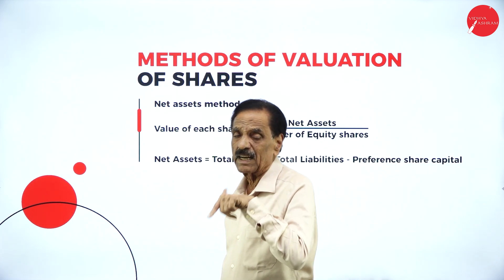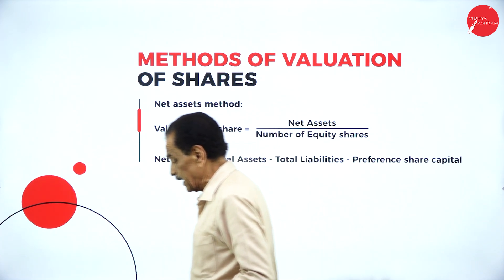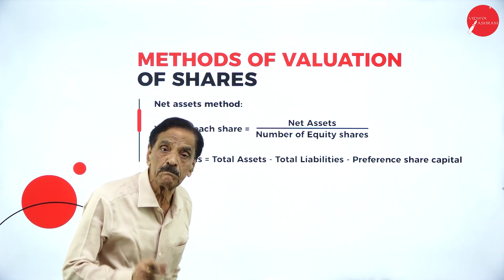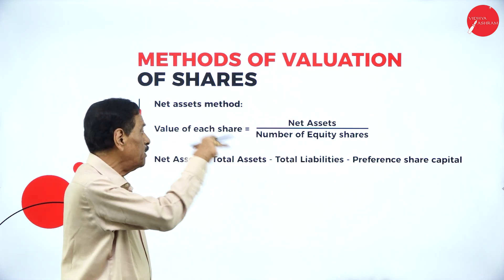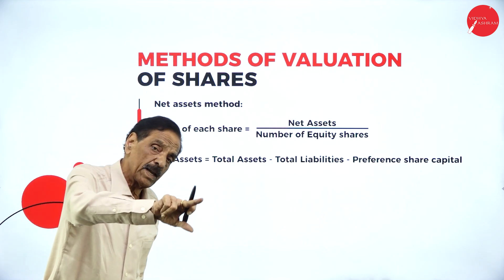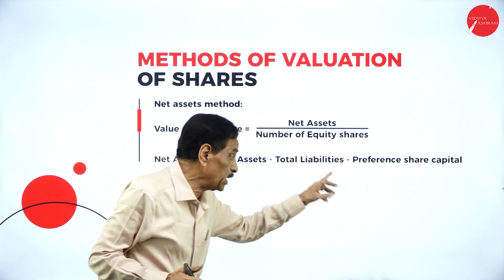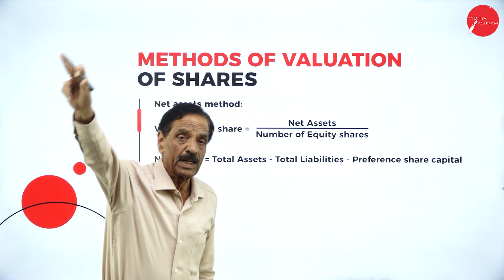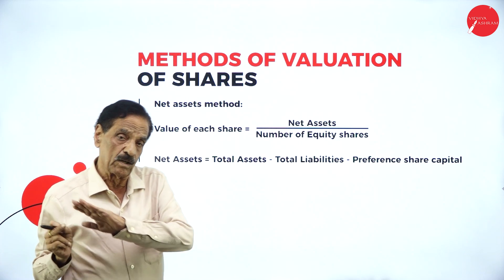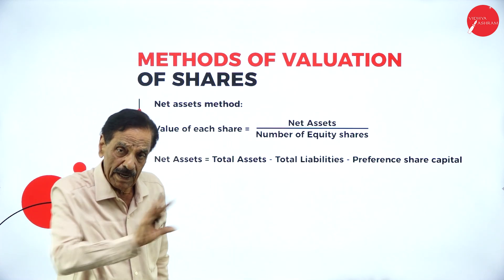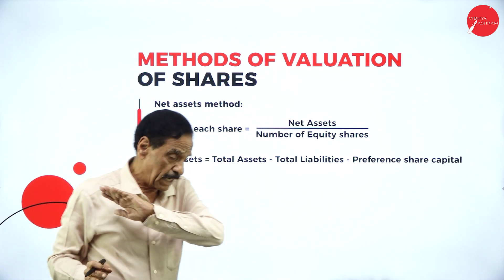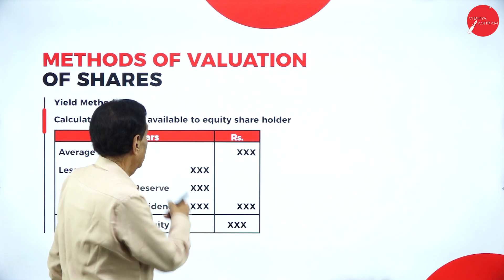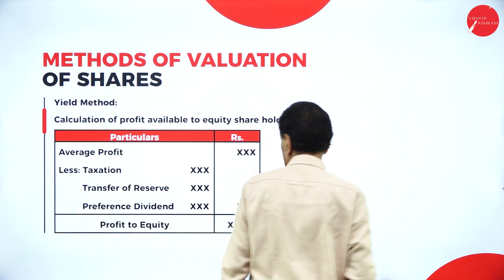There are two methods of valuing shares. One is the net asset method and the other is the yield method. Under the net asset method: value of each equity share equals net assets divided by number of equity shares. Net assets equals total assets (book value or market value) minus total liabilities minus preference share capital, which gives capital employed for equity shareholders, divided by number of equity shares.